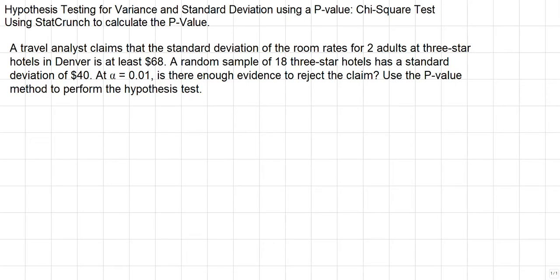A travel analyst claims that the standard deviation of the room rates for two adults at three-star hotels in Denver is at least $68. A random sample of 18 three-star hotels has a standard deviation of $40. At alpha equals 0.01, is there enough evidence to reject the claim? Use the p-value method to perform the hypothesis test.